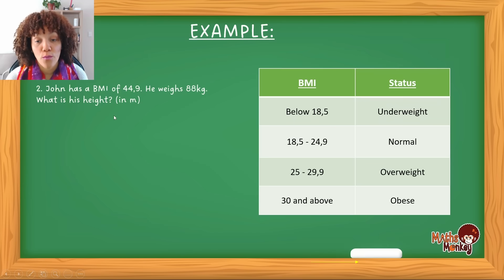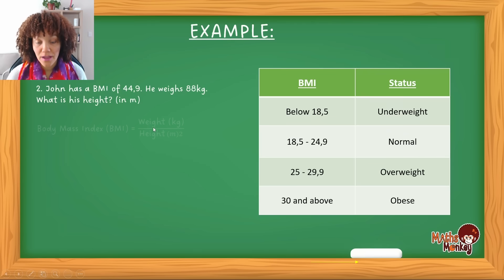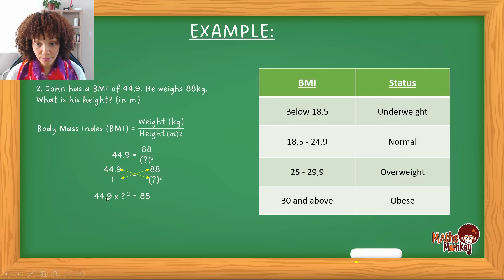John has a BMI of 44.9. He weighs 88 kilograms. What is his height in meters? So if we have a look at this, we see again, substituting all the information that we have, and now we have to calculate what the question mark. So again, I put both sides and I make sure that both sides is in fraction. And then I go cross multiply and each answer I put on each side of the equal to side. So this 44.9 times the question mark, I put on the left side of the equal to side and the one times the 88, I put on the right. It doesn't matter which side you put which answer, as long as for each calculation, you make sure that you put it on either side of the equal to side.